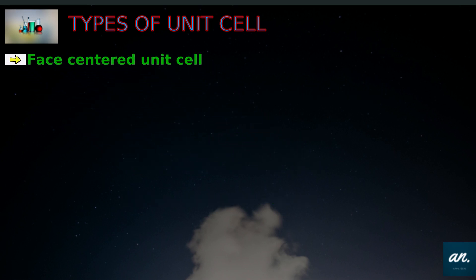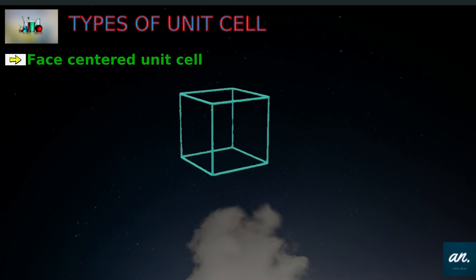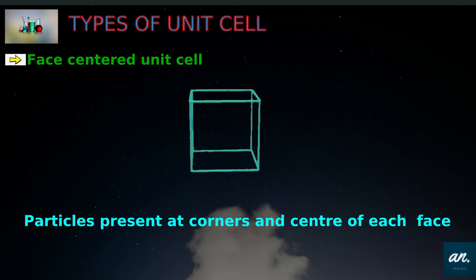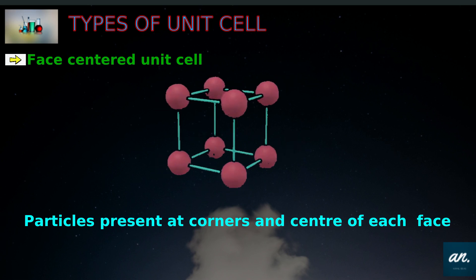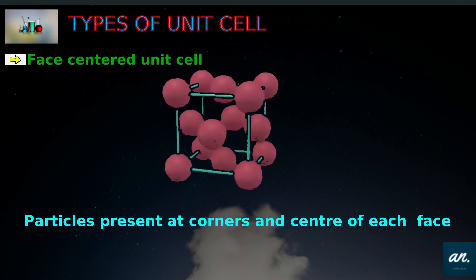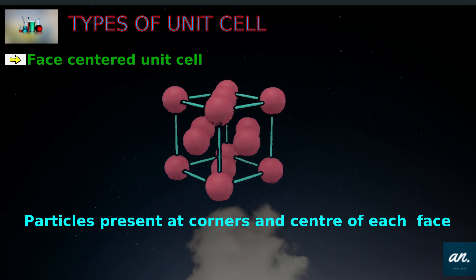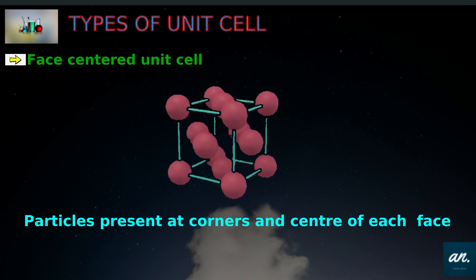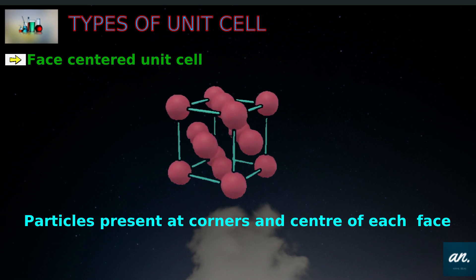First we will discuss the face-centered unit cell. What is face-centered? Particles are present at corners and at the center of each face. You can see in the picture that there is a cube with atoms at the corners and particles at the center of each face. This is the face-centered unit cell.